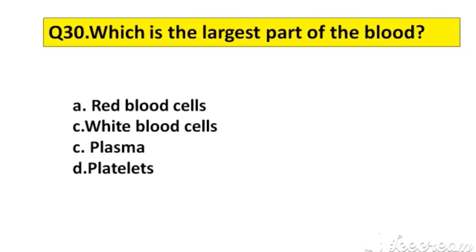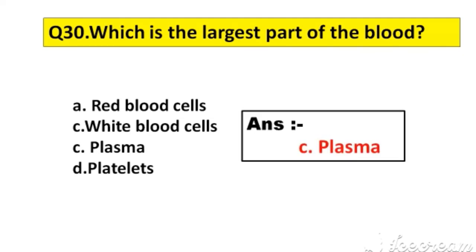Question number 30. Which is the largest part of the blood? A. Red blood cells, B. White blood cells, C. Plasma, D. Platelets. The right answer is option C, Plasma.